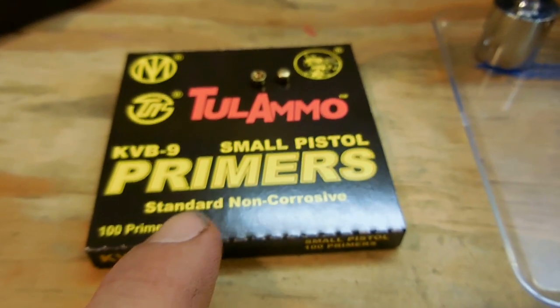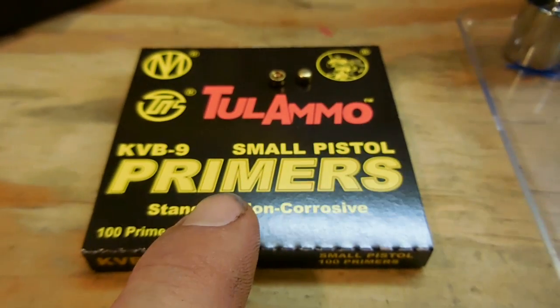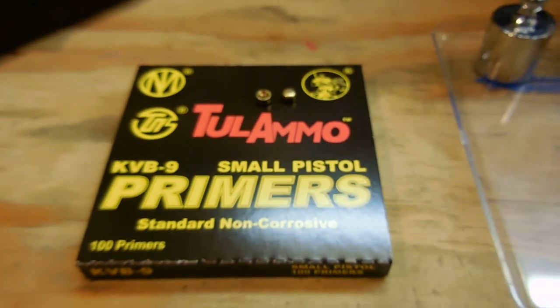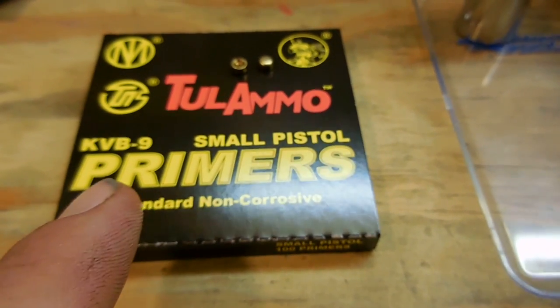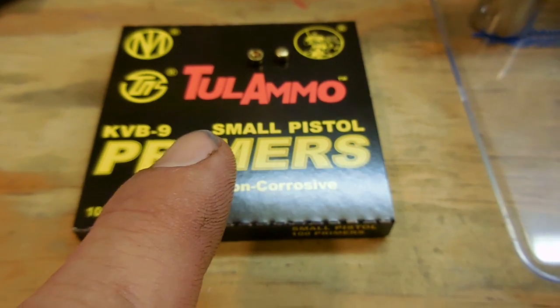So these are my Tula 9mm small pistol primers. Now these pistol primers I can get about 1,000 of them for $23 when I buy in bulk, so I get that cost savings there.